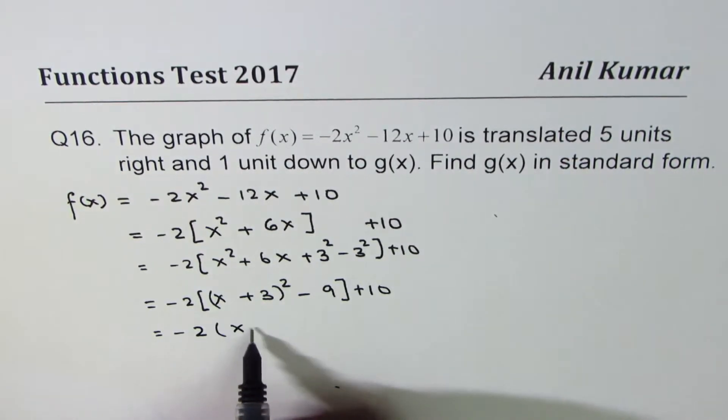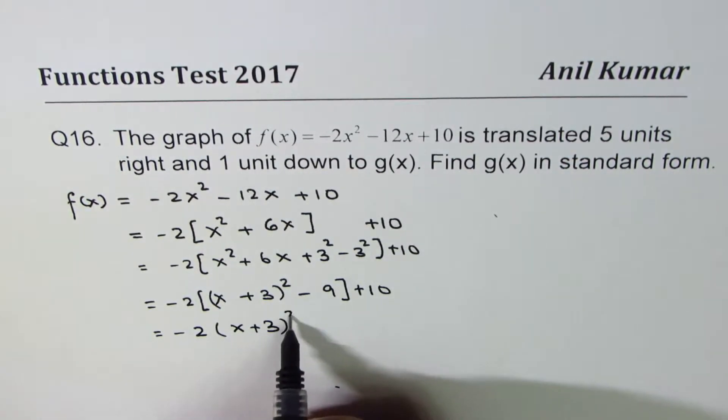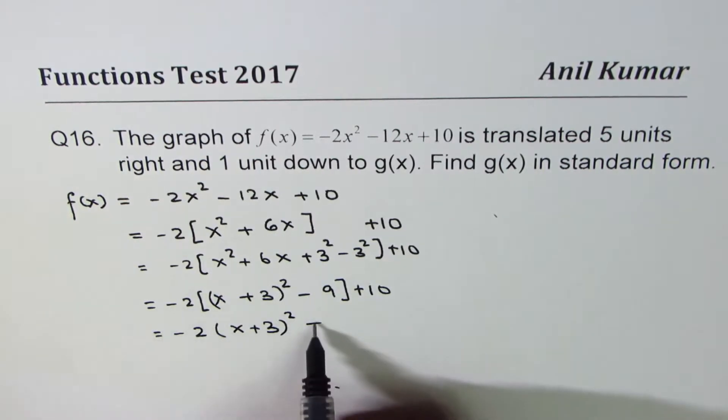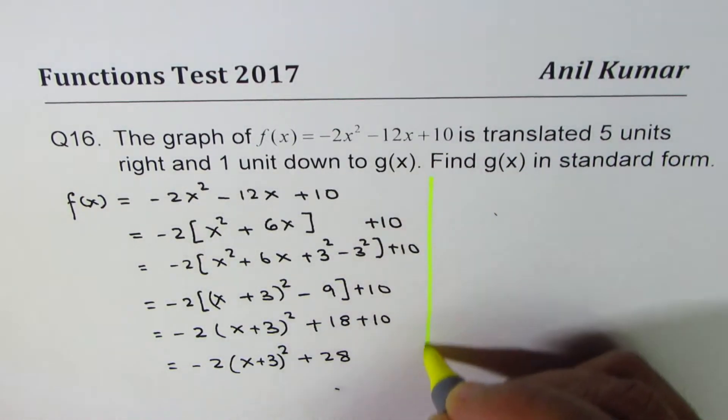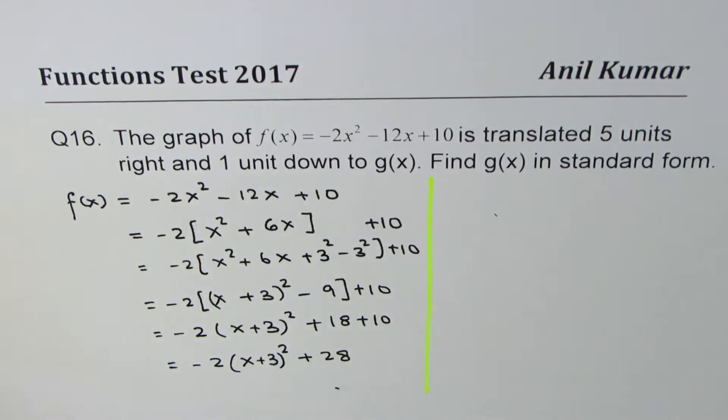Opening the bracket, we get -2(x + 3)² + 18 + 10, which equals -2(x + 3)² + 28. That becomes the function in vertex form.